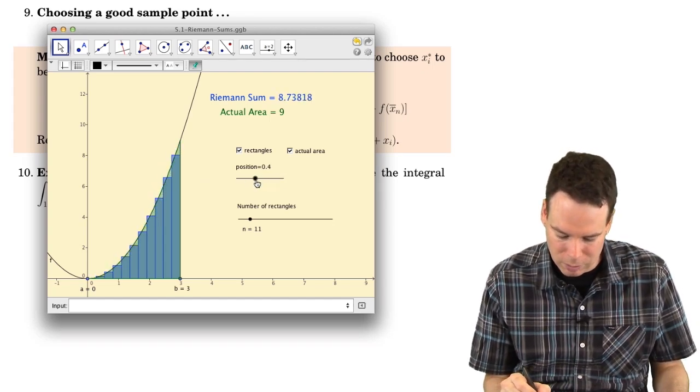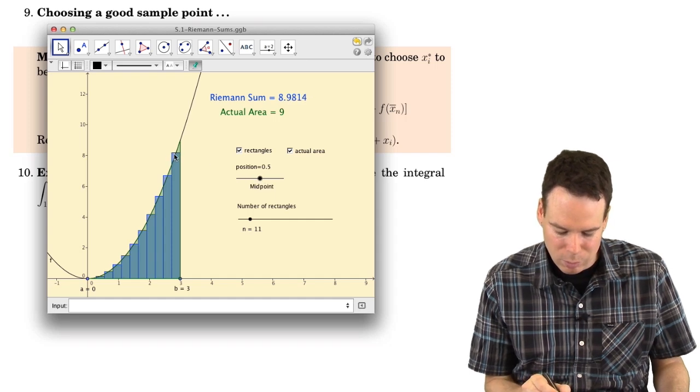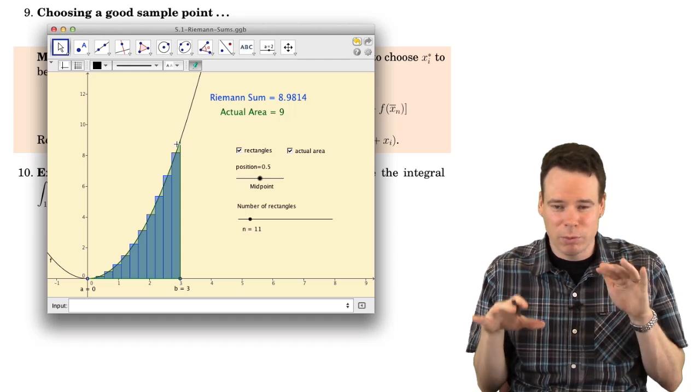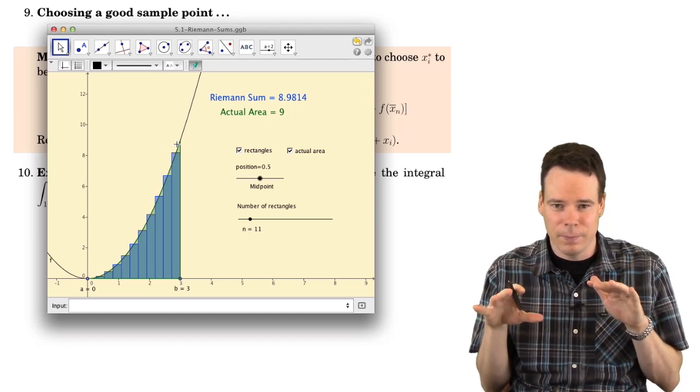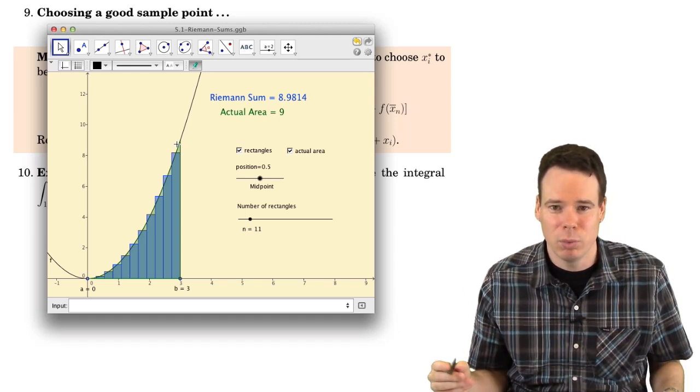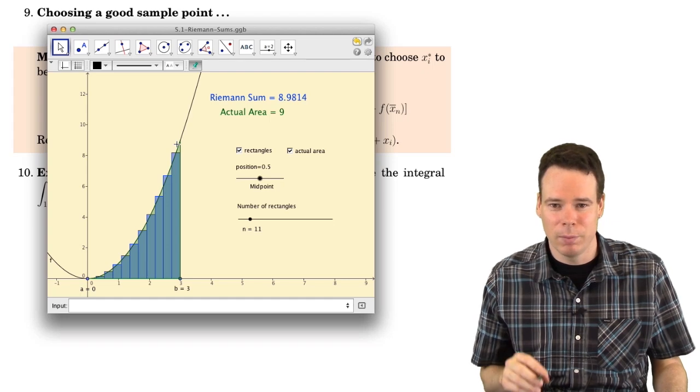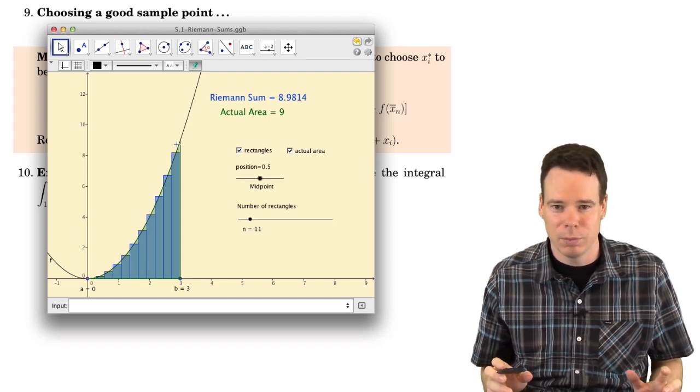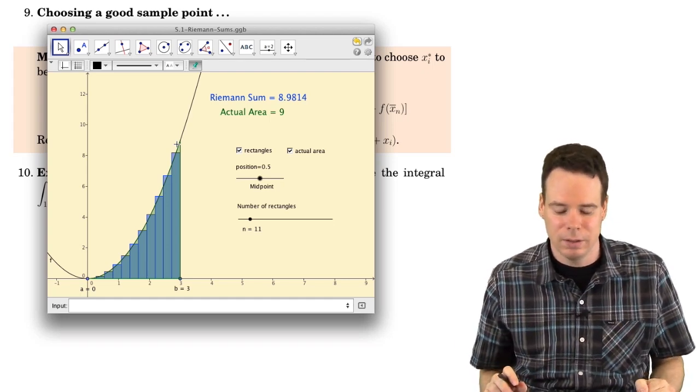But if we use a midpoint, at some point we're missing a gap but we're over counting and those two things seem to do a good job of probably cancelling each other off. So it seems that midpoints will probably do a much better job than left or right hand endpoints by themselves for a fixed number of slices.